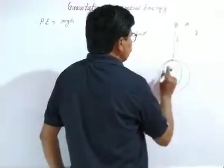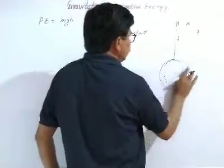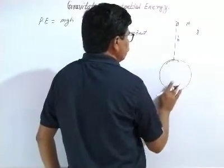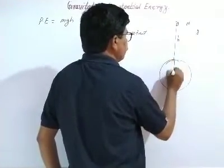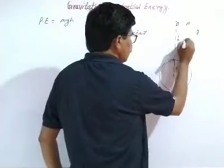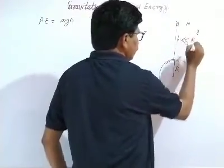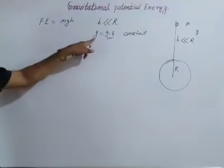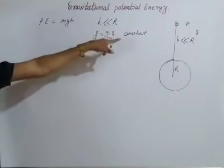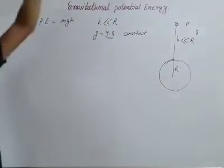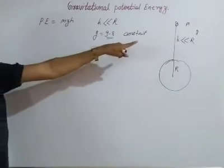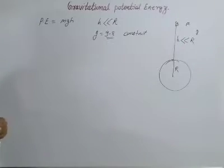The radius of the earth is equal to 6.4 into 10 raised to 6 meters. When this height is very very small as compared to the radius of the earth, you can take the value of g as constant 9.8. That means if the object is above the surface of the earth at some height, but that height is very very less than R, then the value of g is constant.